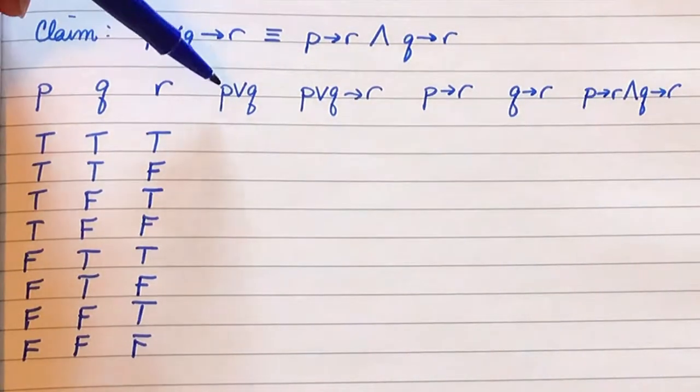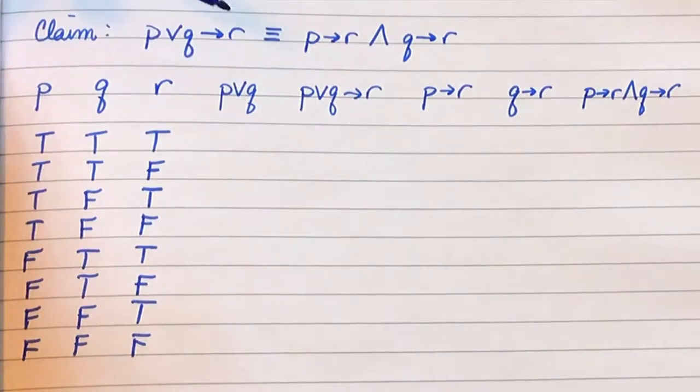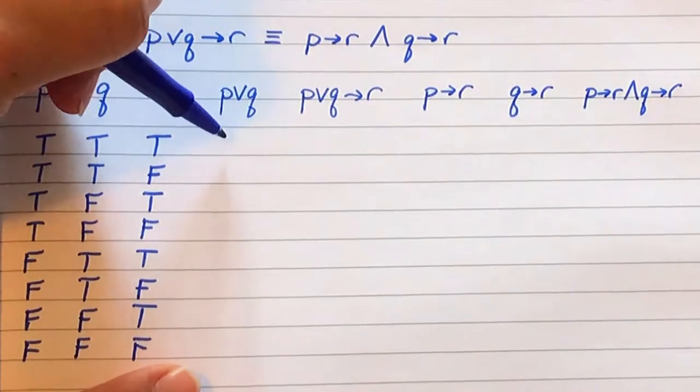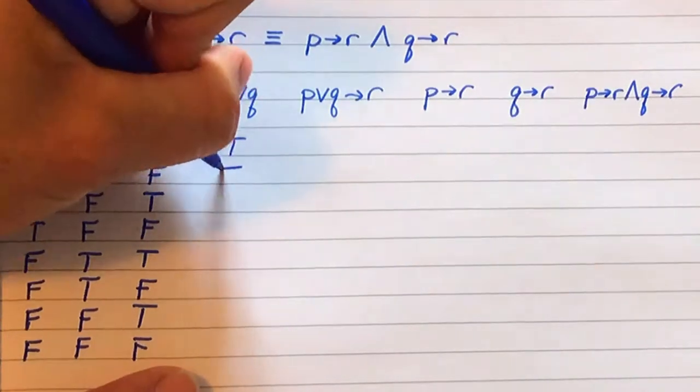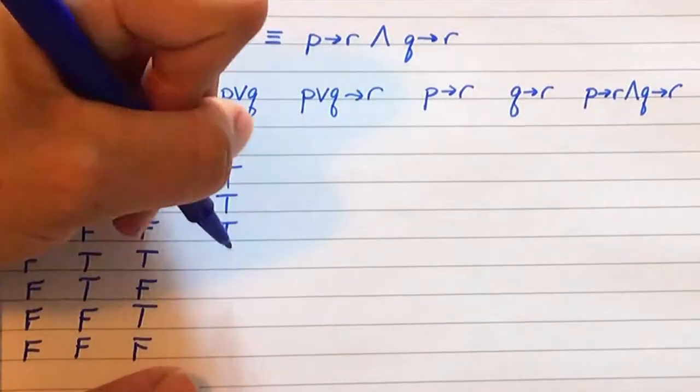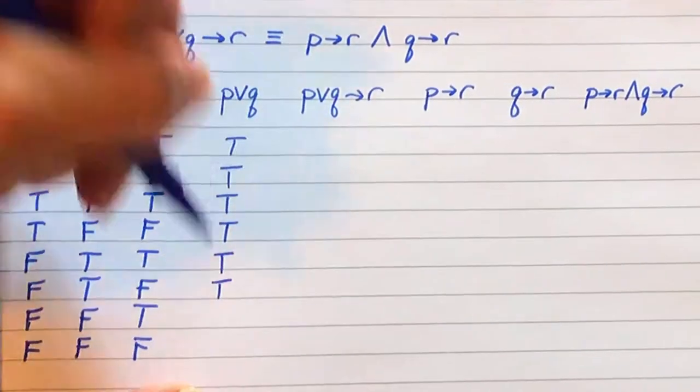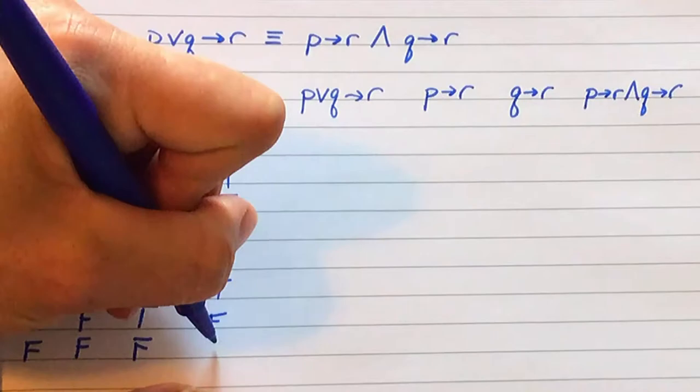The next column here is P or Q. If either P or Q has a T, we write a T. So we are going to have all trues for the top half, and then two more trues and two falses.